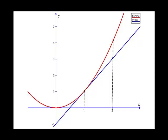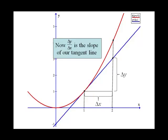If we look at some interval, call it delta x — that'll be our change in our inputs — we have a corresponding change in our outputs that we'll call delta y. Delta y over delta x is the slope of our tangent line.